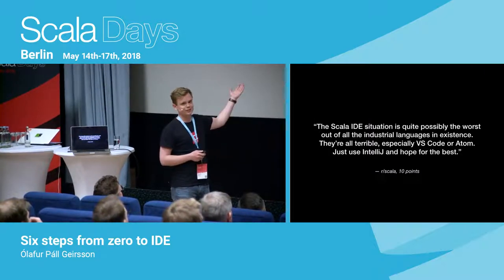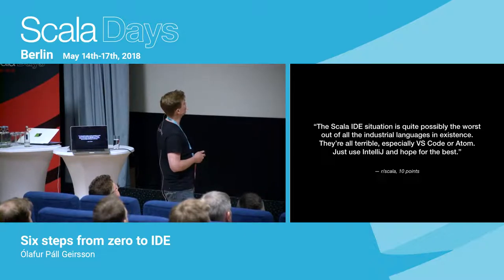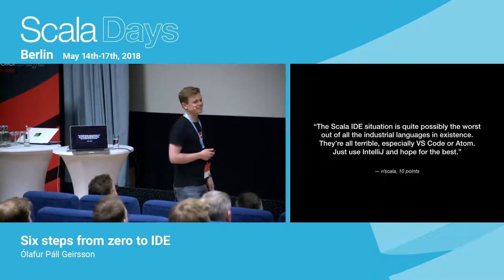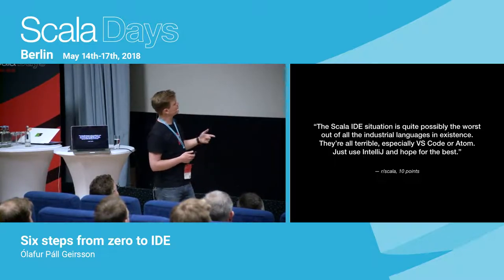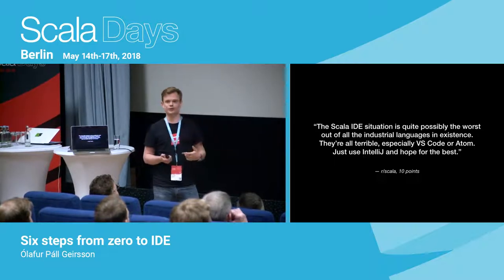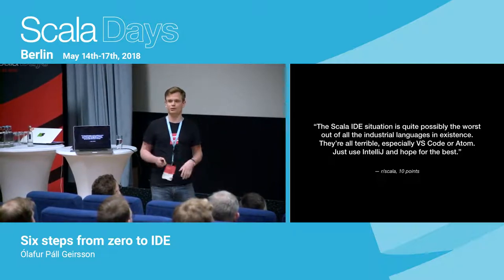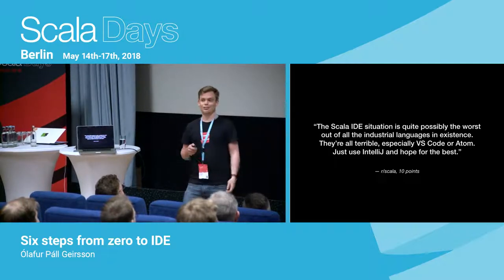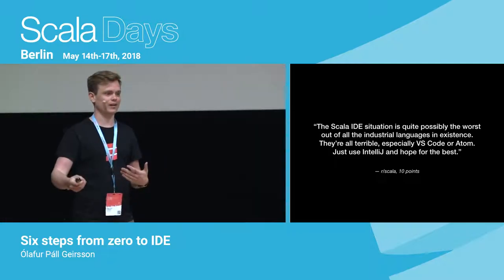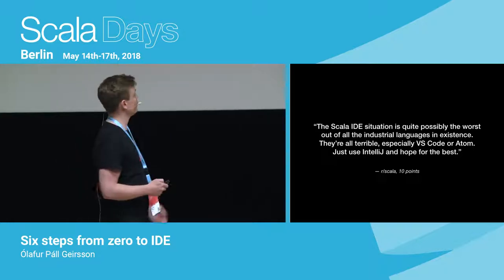That's sort of how I got involved in IDEs, because I've been doing formatting and then refactoring. And I thought, well, I might as well try and get involved in doing editor stuff. And I was sort of excited when I saw this comment on Reddit: 'Scala IDE situation is quite possibly the worst out of all the industrial languages in existence. They're all terrible, especially VS Code or Atom. Just use IntelliJ and hope for the best.' I think it's a great quote because partly it's kind of accurate. I'd just say just use IntelliJ — that's definitely by far the best option you have today. But where do I see it going in the next two, three years? I think VS Code and Atom are actually going to become really, really good contenders.